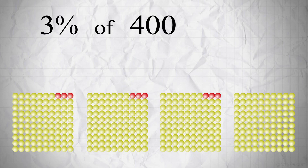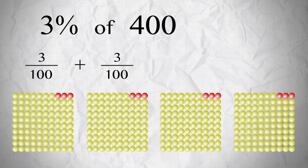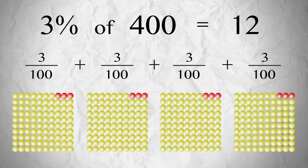Suppose there are 400 marbles and 3% of them are red. Percent means out of 100, so 3 out of every 100 marbles are red. You can think of 3% of 400 like this: 3 out of 100, plus 3 out of 100, plus 3 out of 100, plus 3 out of 100, equals 12 out of 400. So 3% of 400 is 12.